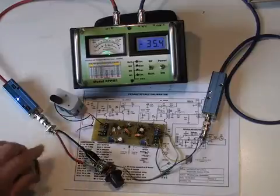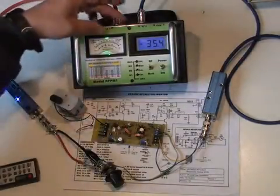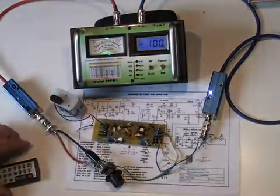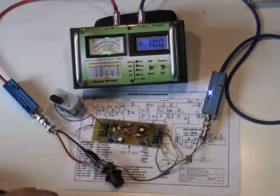I have now reduced the input level to the amplifier to minus 35 dBm, and at that level we're getting minus 10 dBm. So the gain of the amplifier varies with the drive level.